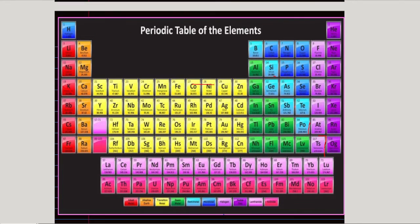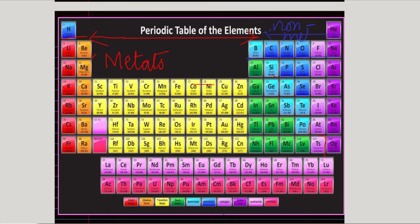This is the periodic table. On the left-hand side, from Group 1 to Group 3, we have metals. On the right-hand side, from Group 3 onwards, we have non-metals. Elements are arranged in the periodic table according to their increasing proton numbers.